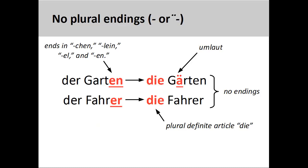The first group consists of nouns that do not take a plural ending, although some of them may add an umlaut to the stem vowel of the noun. Most nouns in this group are masculine and neuter nouns ending in -chen, -lein, -el, and -en. The noun Garten, garden, adds an umlaut in the plural, Gärten, whereas another noun, Fahrer, driver, does not.